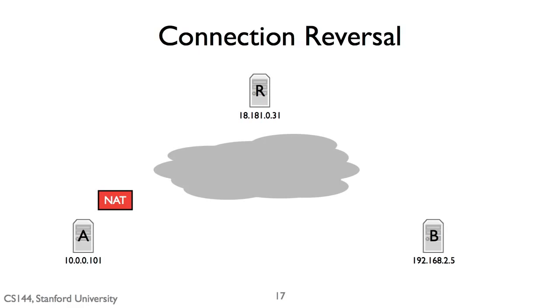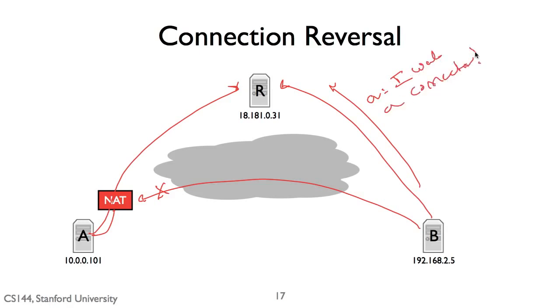So the first approach, and talked about this briefly in the Skype lecture before, is something called connection reversal. So imagine that A is sitting behind a NAT, and B wants to open a connection to A. Well, B can't, because the NAT has no mapping, these packets will bounce off, you get ICMP errors. And so what you can do is have some kind of reversal service, or some kind of rendezvous service, where both A and B are connected to the rendezvous service. And when B wants to open a connection to A, what it actually sends is, it sends a request, Hey, A, I want a connection.